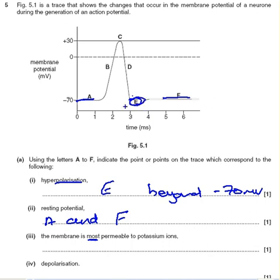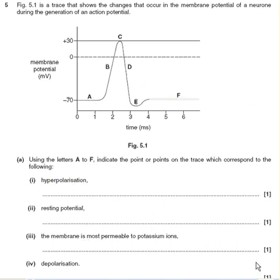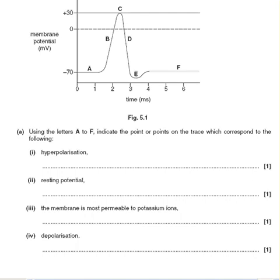The membrane is most permeable to potassium ions during hyperpolarization, where you've got more potassium ions than needed. So it must be point D — this is the point where we have the most potassium ions rushing in. Next: depolarization.